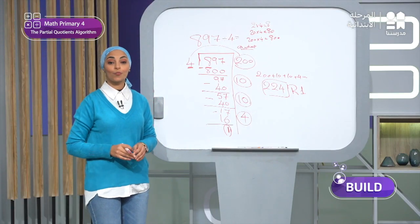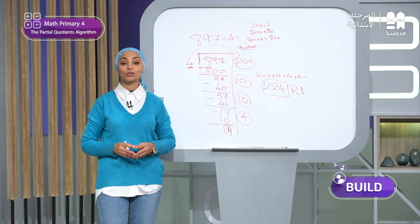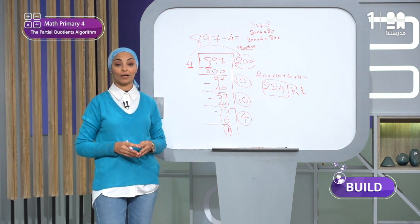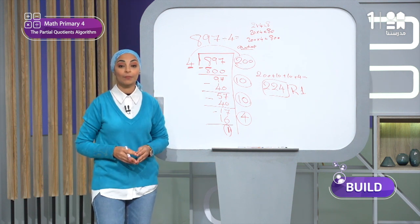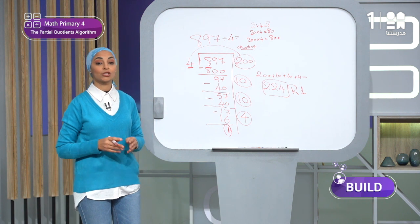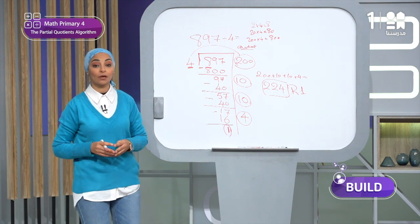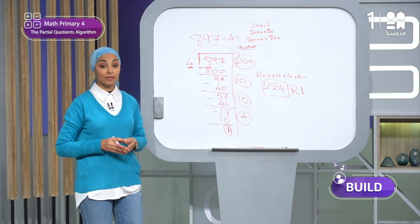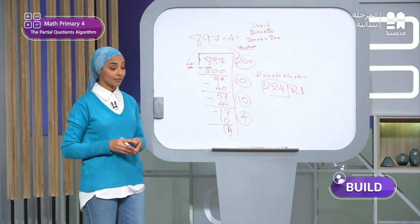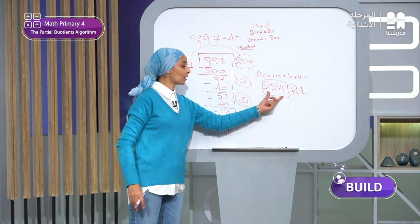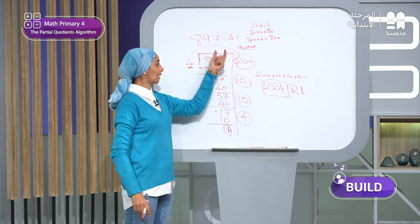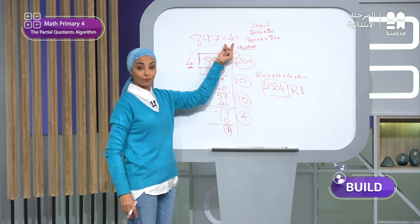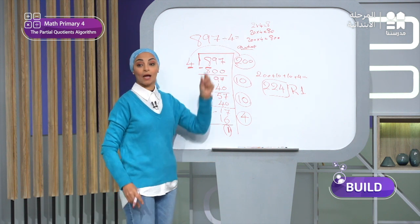There is something important to notice: since we have a remainder, the dividend 897 is not a multiple of 4. If there is a remainder, the dividend is not a multiple of the divisor.